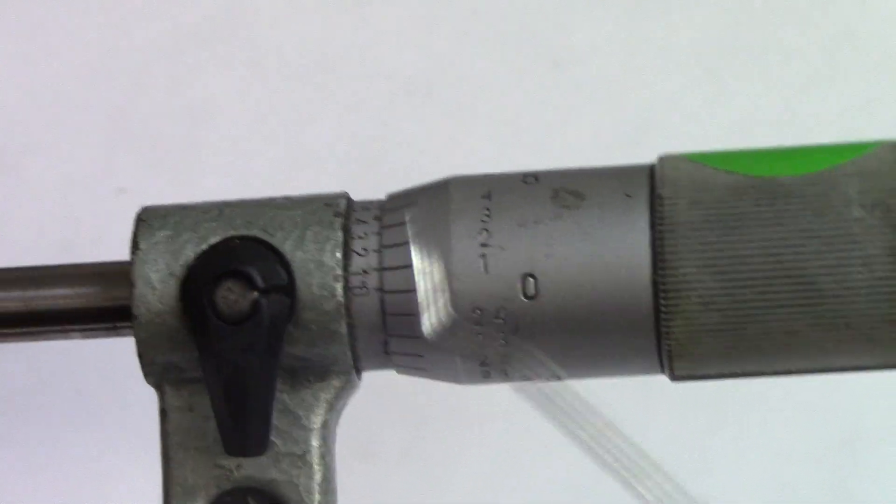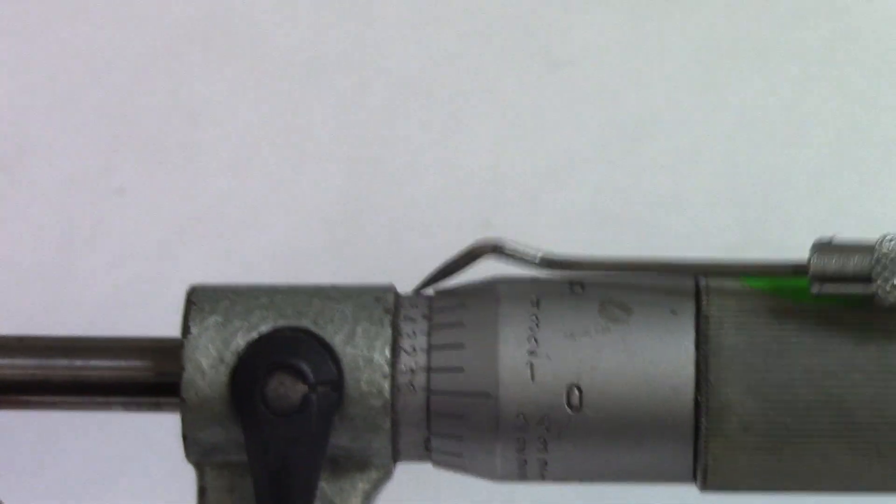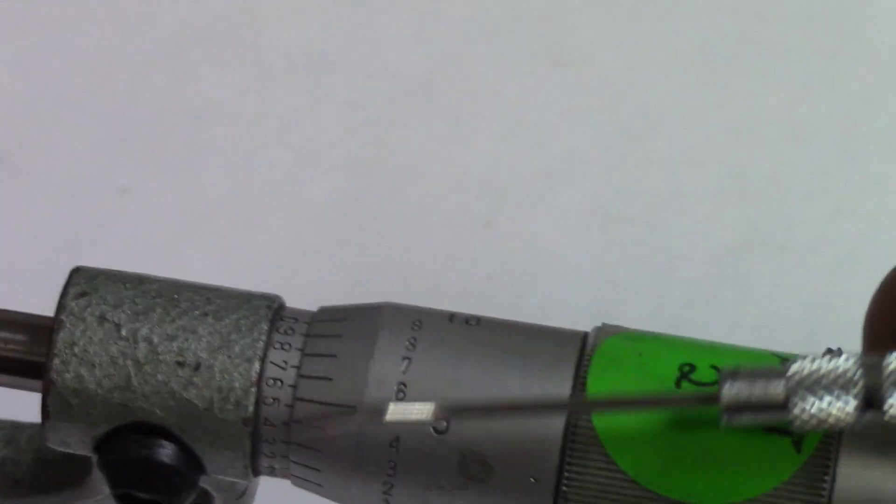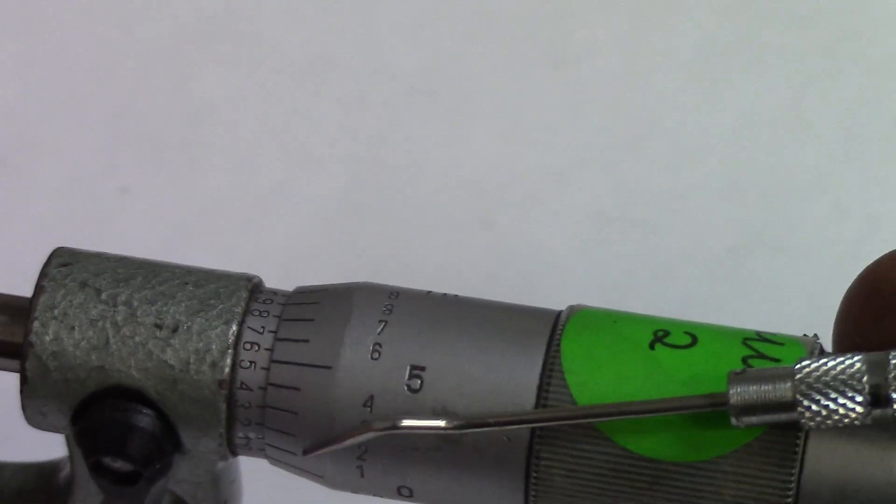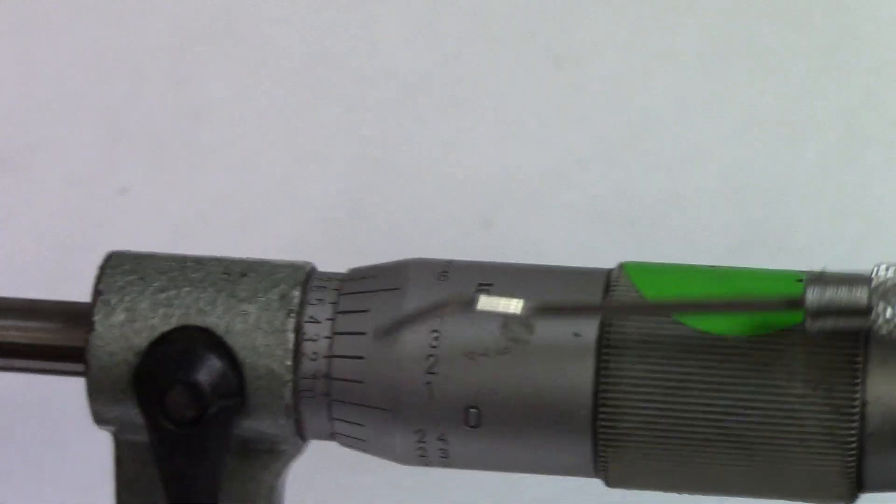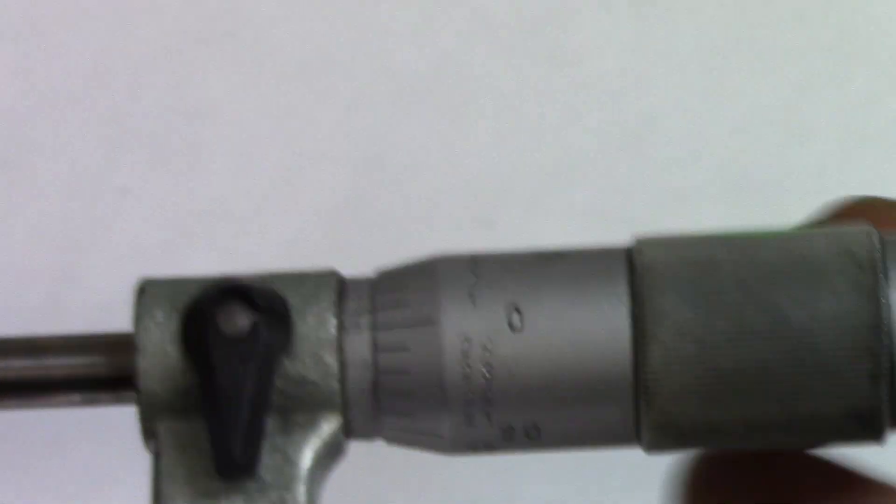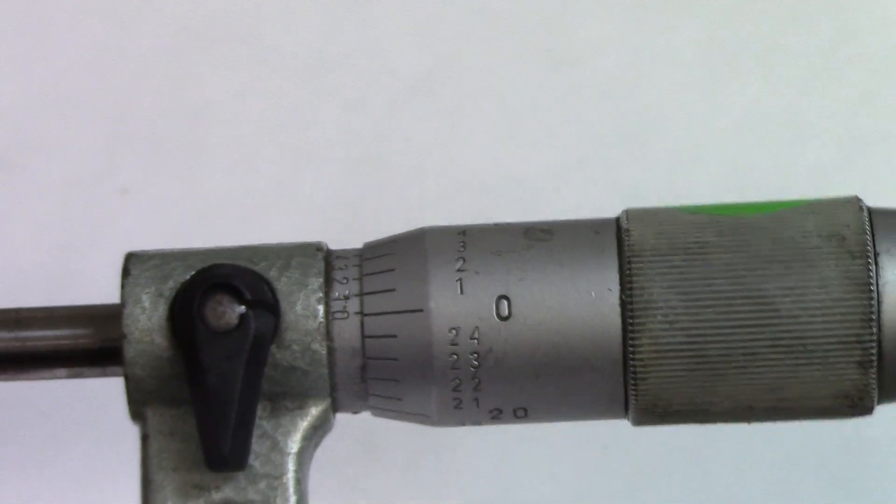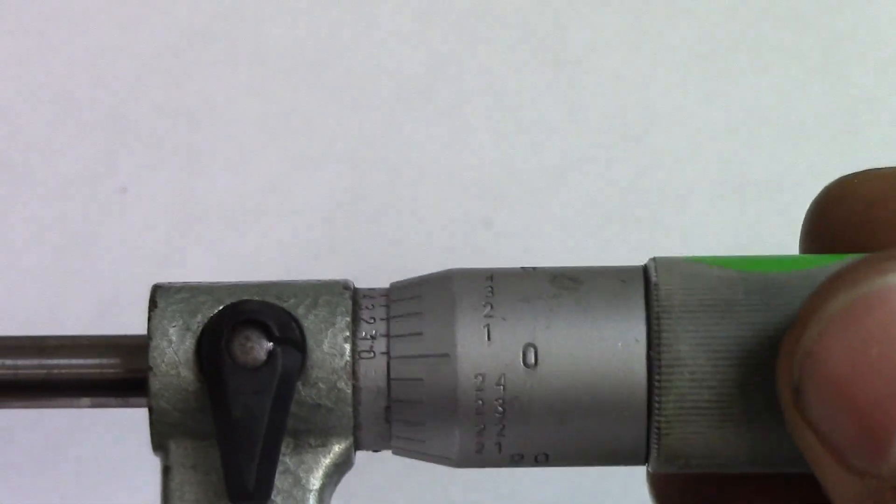This zero right here is your tenths. All these numbers right here are your tenths, and these right here are your 0.001, which is your one thousandths. The zeros need to line up with each other. You can also check on gauge blocks, which I would recommend.